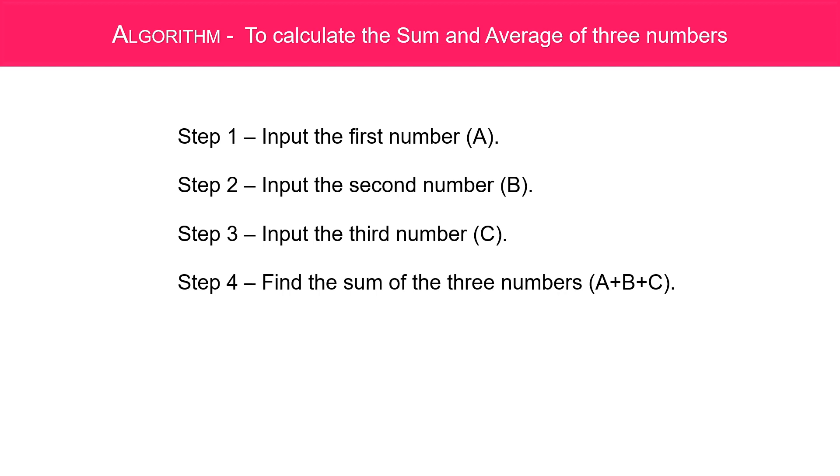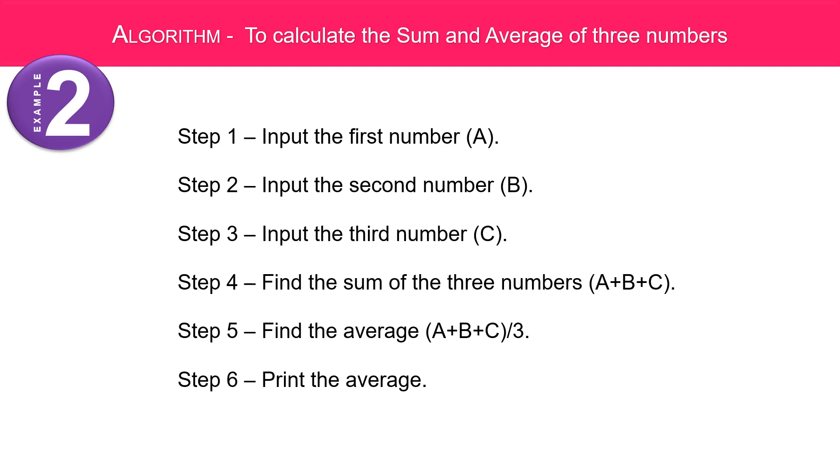Step 4: find the sum of the three numbers A plus B plus C. Step 5: find the average A plus B plus C divided by 3. And step 6: print the average. That was example number two.